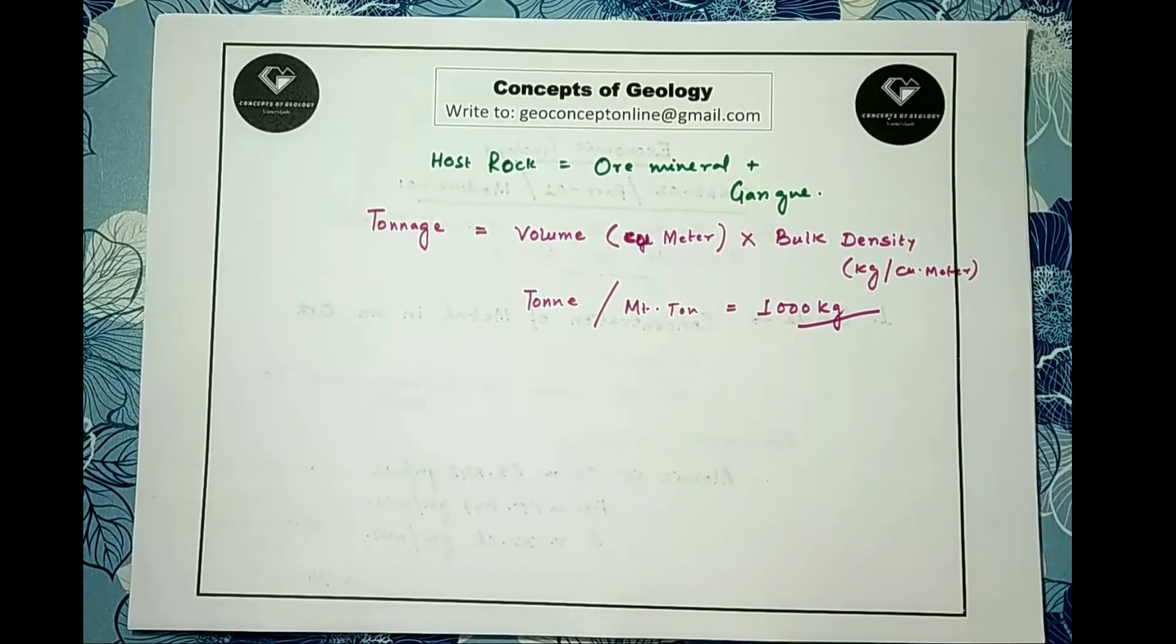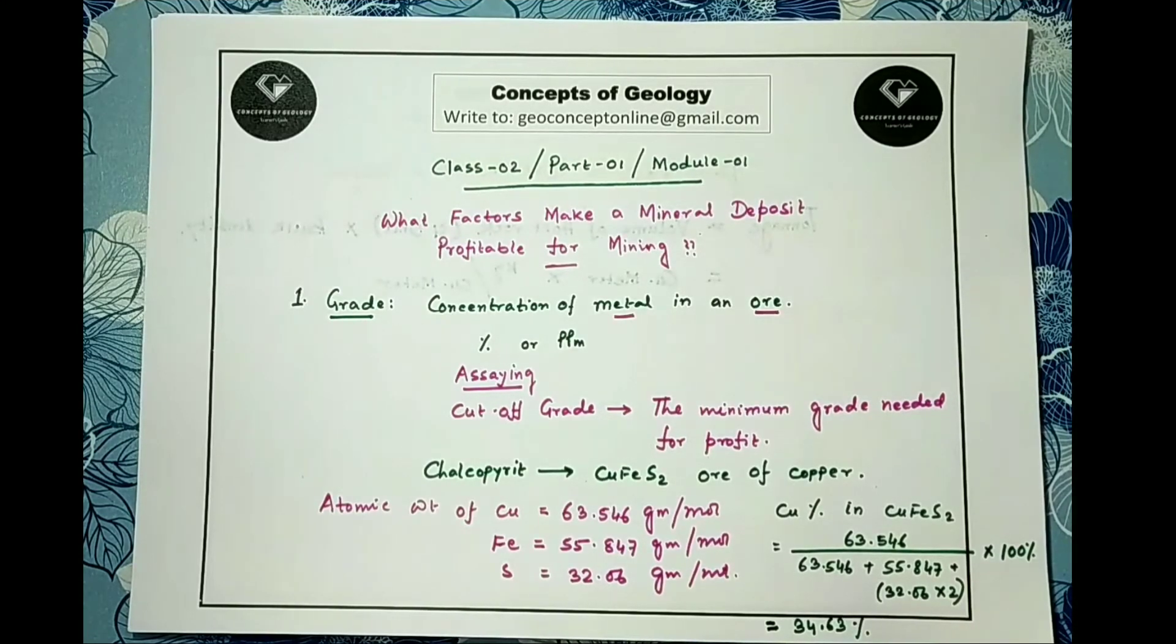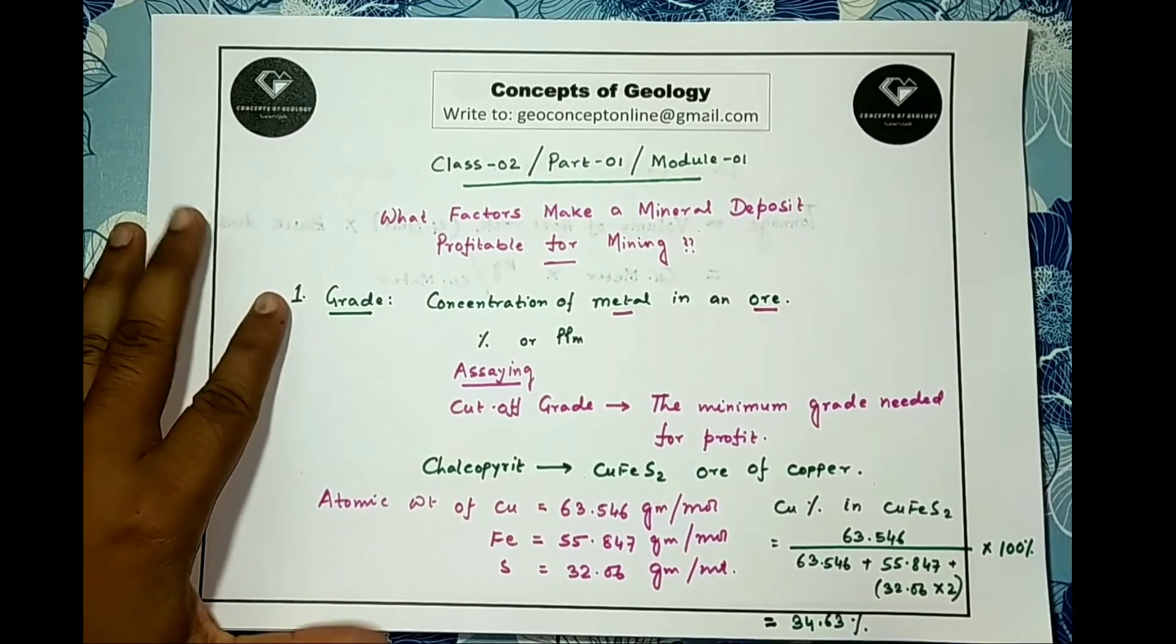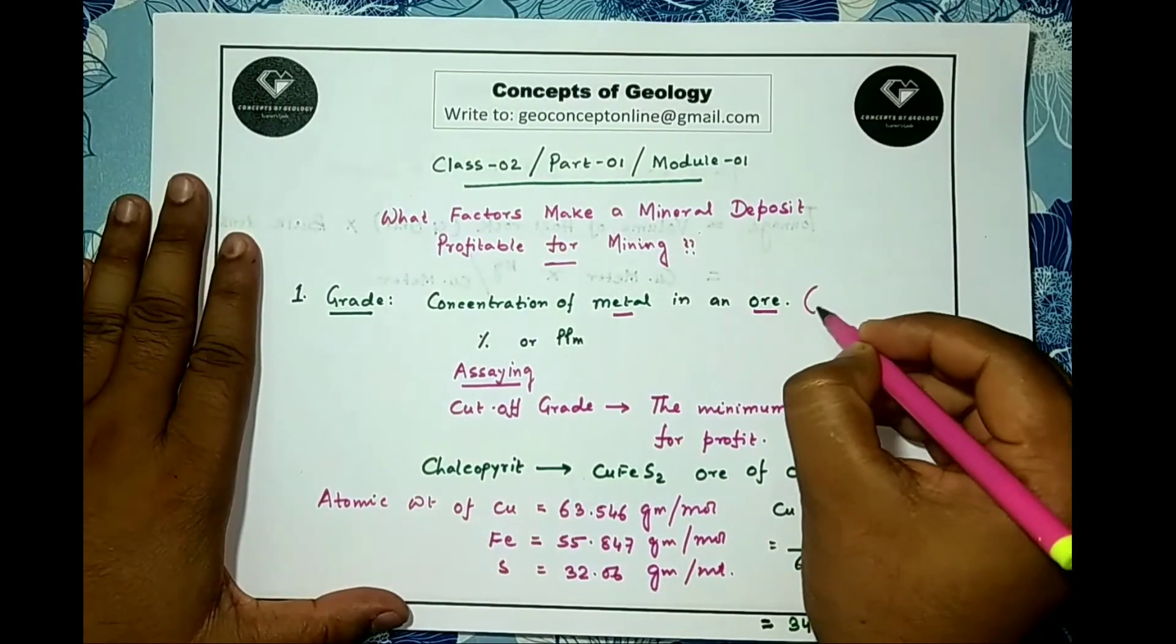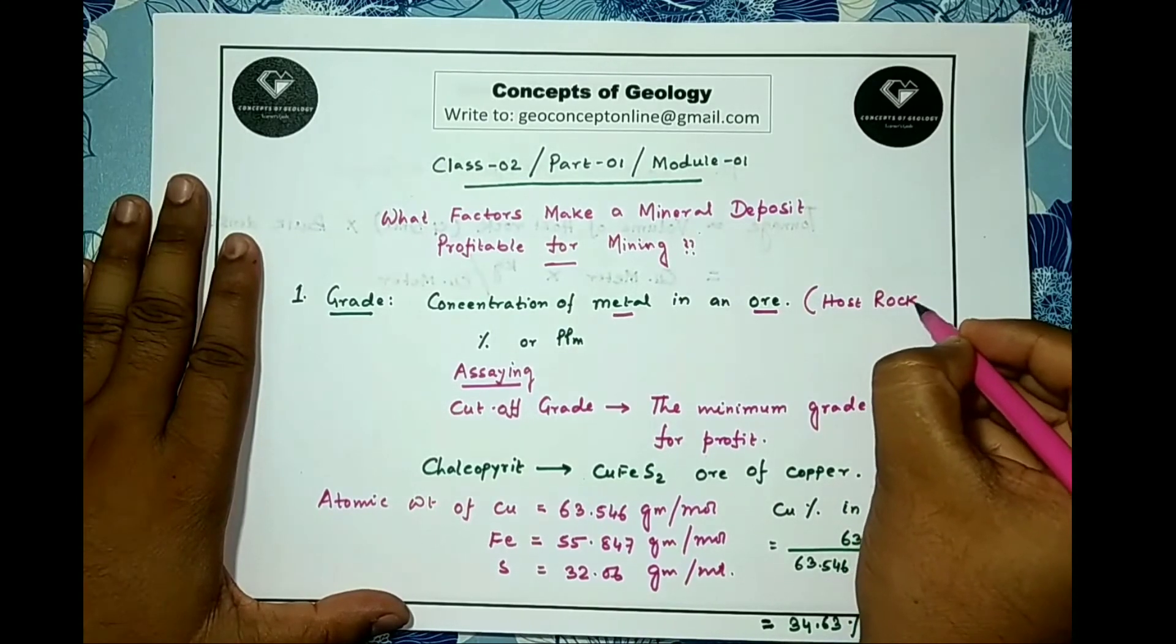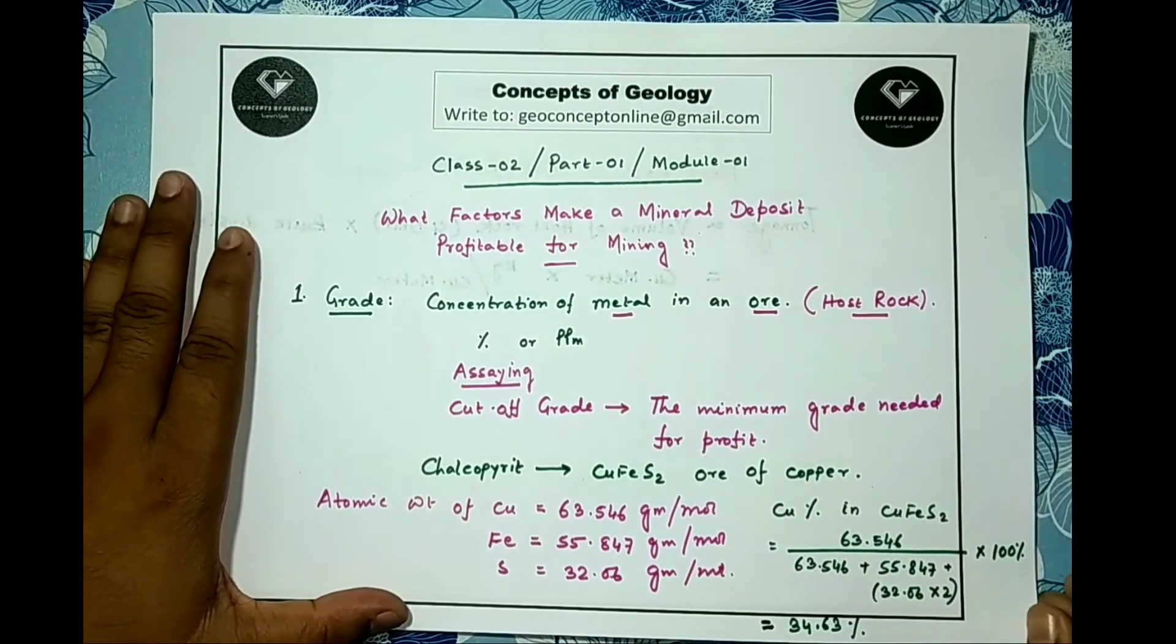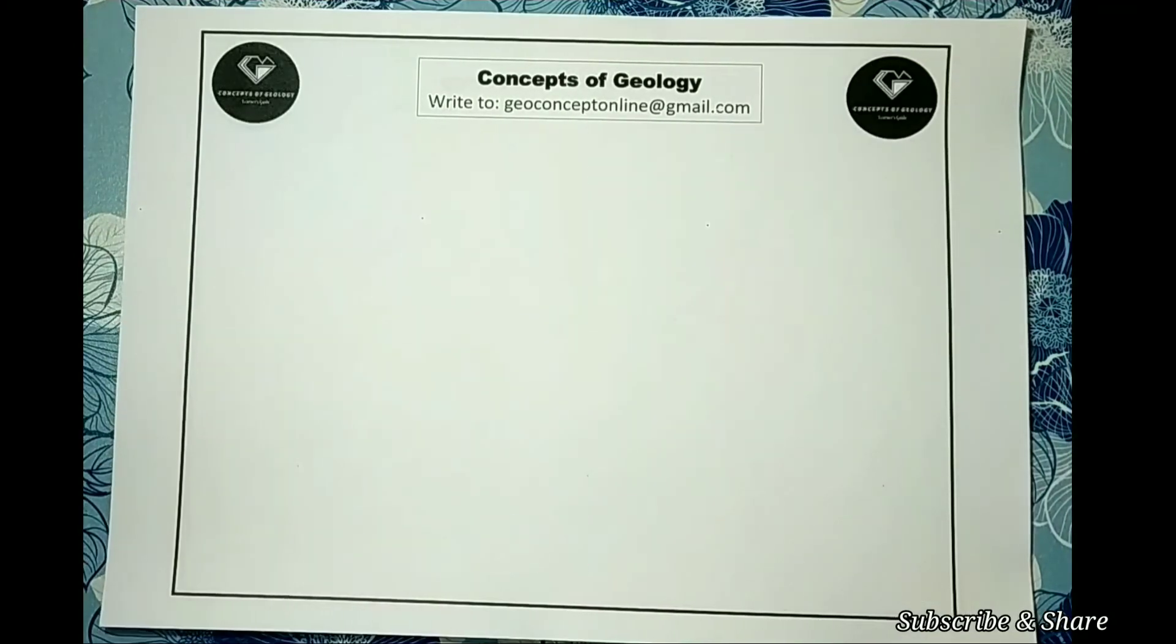Take a note here that the concentration of metal in the ore mineral is not varying; rather, the concentration of the ore mineral in the host rock is varying. That is why my grade is varying. Let us write the definition of grade in a more scientific way. This is the concentration of metal in the host rock. I think the confusion ends here.